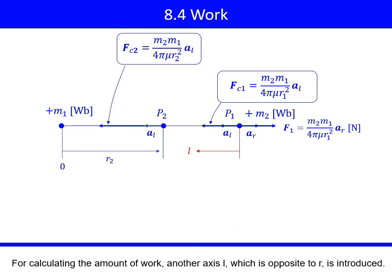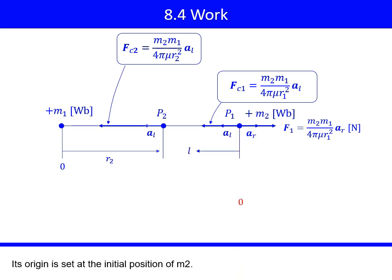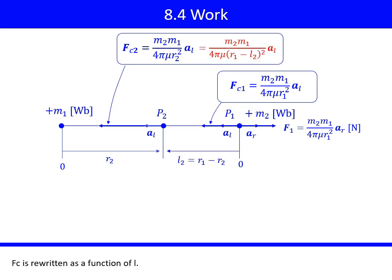For calculating the amount of work, another axis L, which is opposite to R, is introduced. Its origin is set at the initial position of M2. The relationship between R and L is that L2 equals R1 minus R2. Fc is rewritten as a function of L.